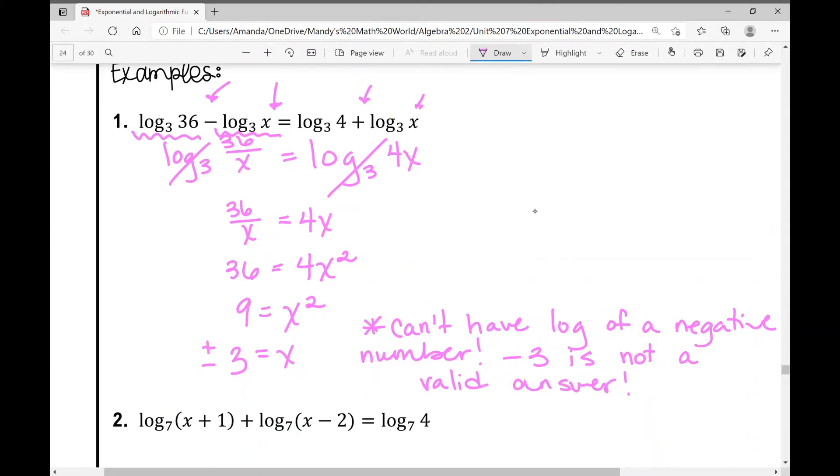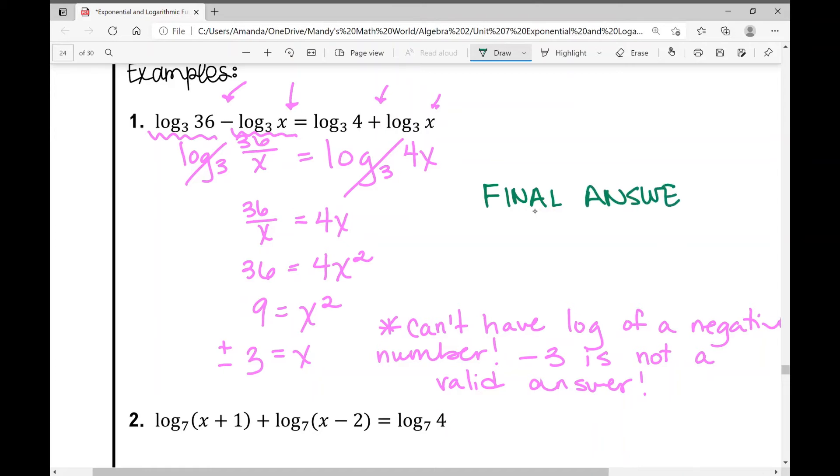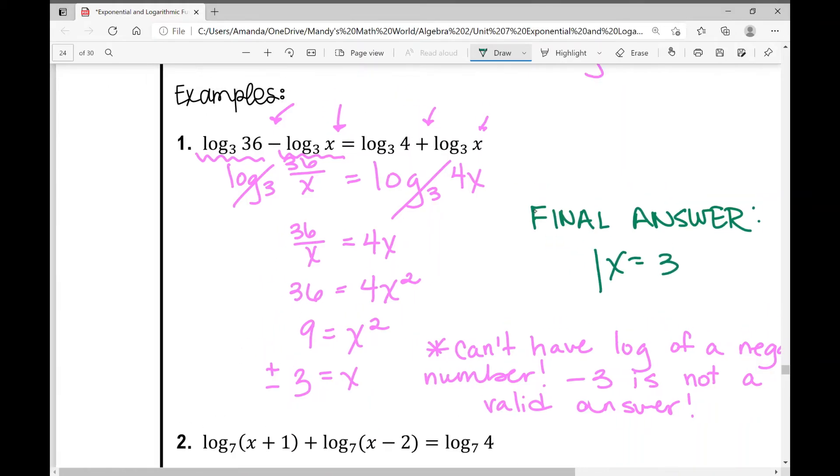So negative 3 is not a valid answer. Which means your final answer for this one is that x equals positive 3. That works because you can have the log of a positive number.